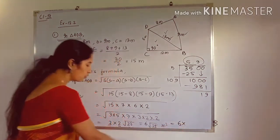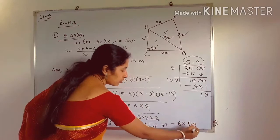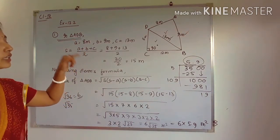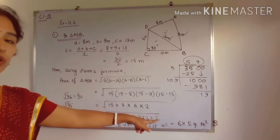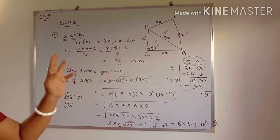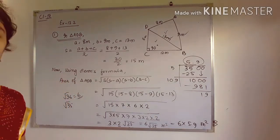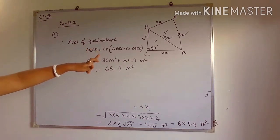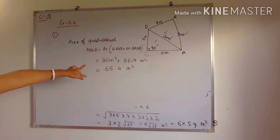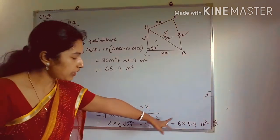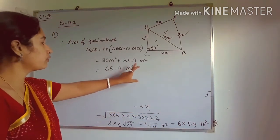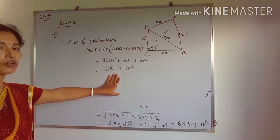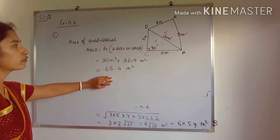Finally, the area of quadrilateral ABCD = area of triangle BDC + area of triangle ADB = 30 + 35.4 = 65.4 m², approximately. So you can write the answer as approximately 65.5 m² as well. This is the area of quadrilateral ABCD.